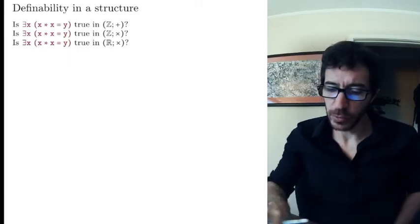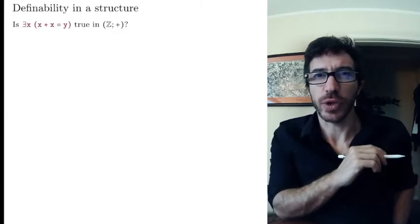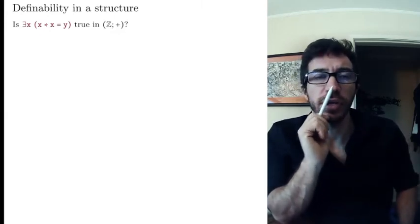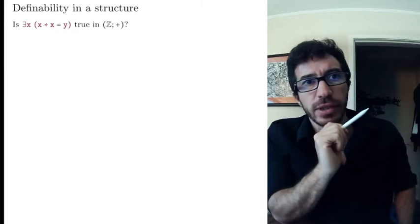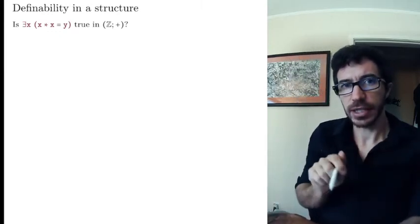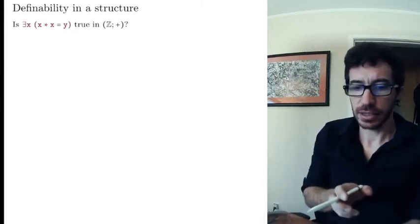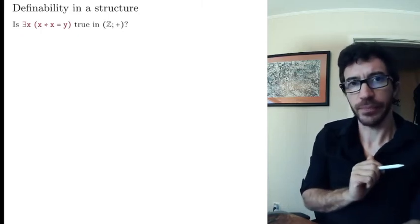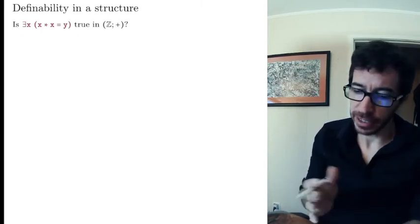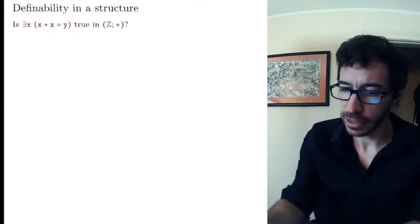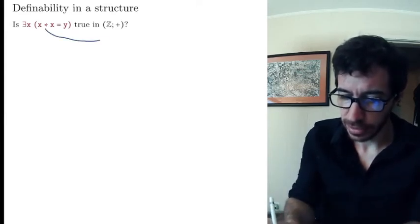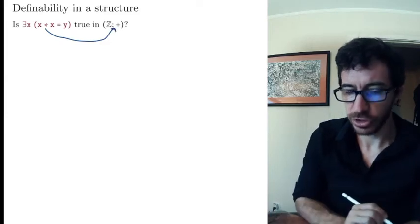Let's start with a few questions we've seen before. Consider that formula: there exists an x such that x times x equals y, where the star is being interpreted as plus in the structure of the integers.